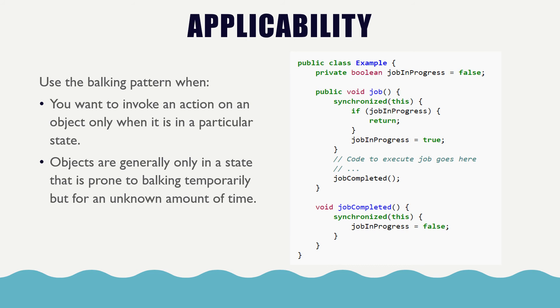The applicability. Use the balking pattern when you want to invoke an action on an object only when it is in a particular state. Objects are generally only in a state that is prone to balking temporarily, but for an unknown amount of time.